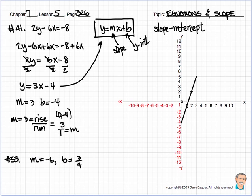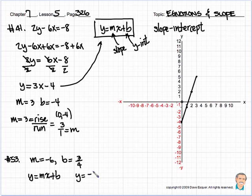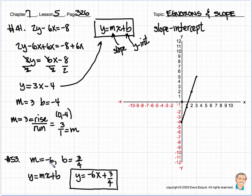Number 53 says m is equal to minus 6, and b is equal to 3 fourths. Let's put this into slope-intercept form. These are probably the easiest problems we're going to have for a little bit. So m is equal to minus 6, b is equal to 3 fourths. y is equal to mx plus b — well, y turns out to be equal to minus 6x plus 3 over 4. There's our equation. That's all they wanted us to do on number 53 — write an equation in slope-intercept form. It gave us the slope, it gave us the y-intercept, we plugged them in, we got our equation.